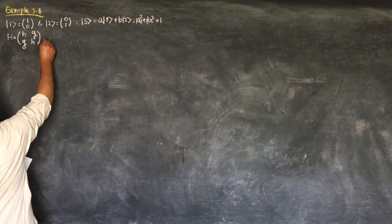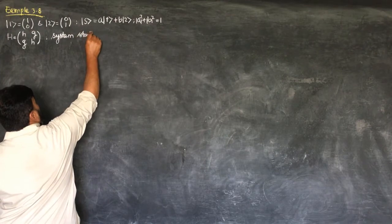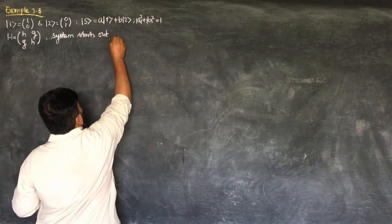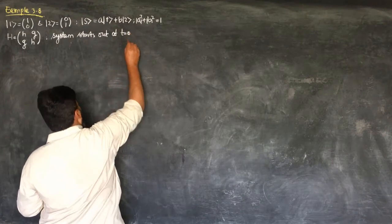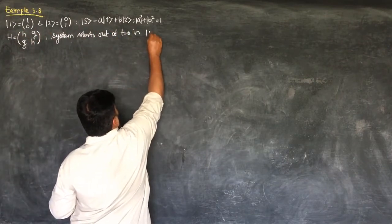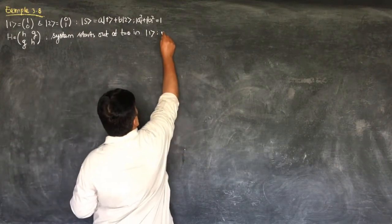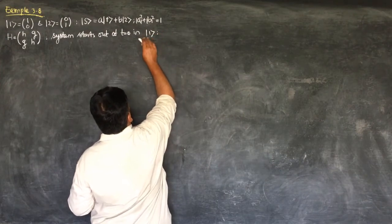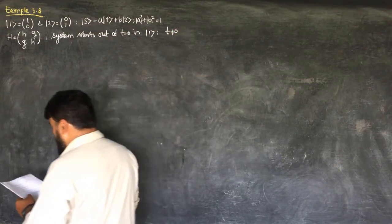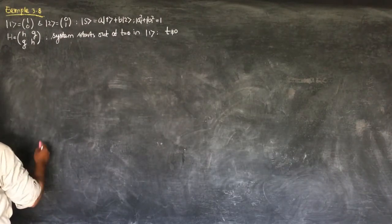If the system starts out at t = 0 in state |1⟩, then what will be the state at any other time t? We now solve this example.